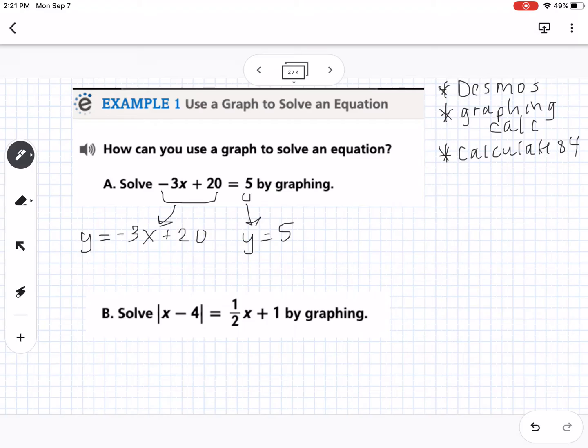And then you can graph them as two separate equations. So, if we were to graph these, you would have a line that goes like that, you would have a line like that for the y equals 5, and then you would find that intersection point right there, which the solution is x equals 5. So, that's how we're using graphing. And again, it depends on what technology you're using for how you find these.